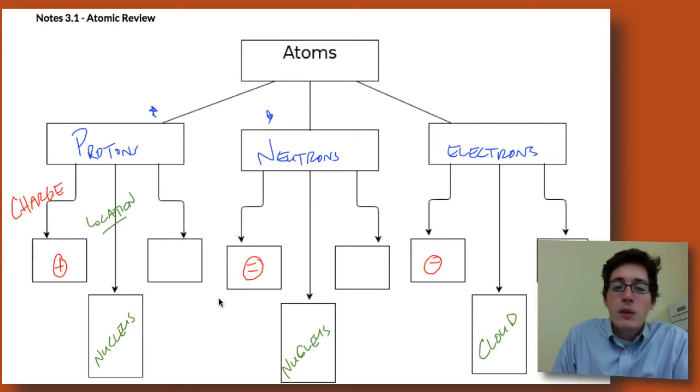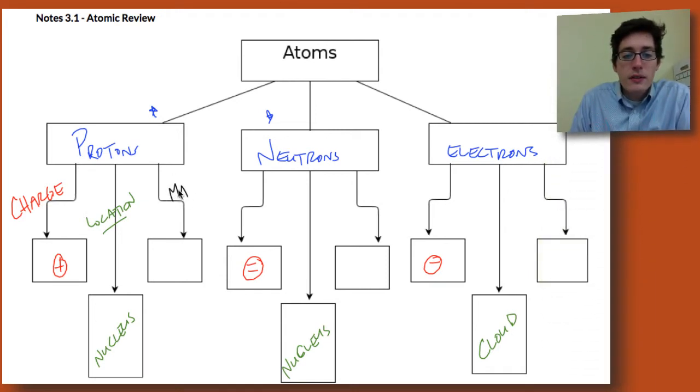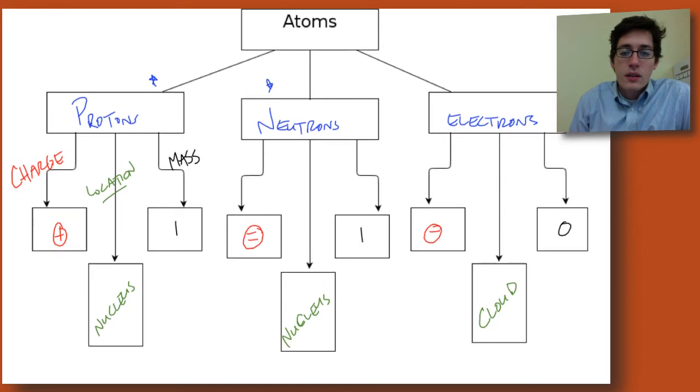And then finally, we need to know the mass. So what is the mass of one of these particles? Protons have a mass of one. Neutrons are the same size, they also have a mass of one. And then electrons have a mass of zero. So this is chapter two in a nutshell. That's the whole thing right there, pretty much.